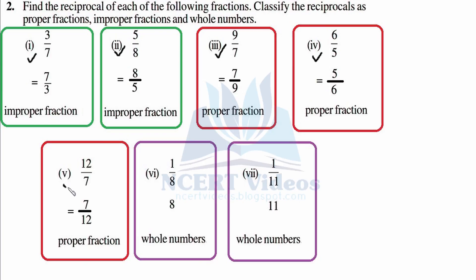Now 1/8 — when you flip it, it becomes 8/1, and we need not write 1 in the denominator, so this is a whole number. Last part: again when we flip it, it becomes 11, which is a whole number. Whole numbers are those which start from 0 and go to infinity in the positive direction. That was question two.